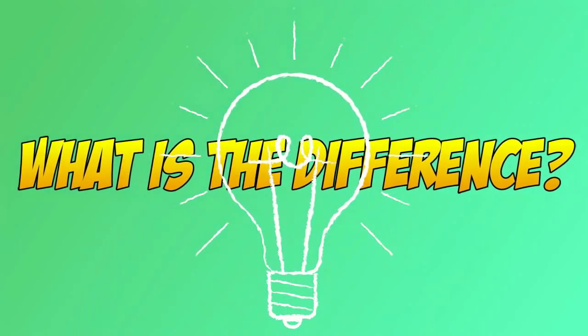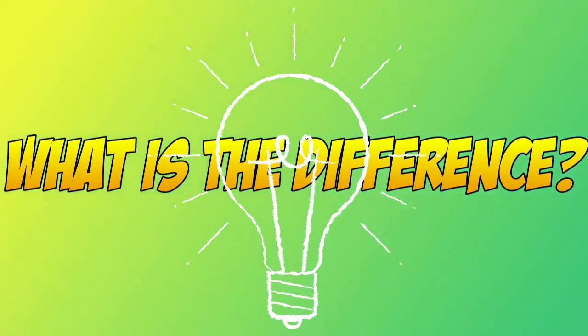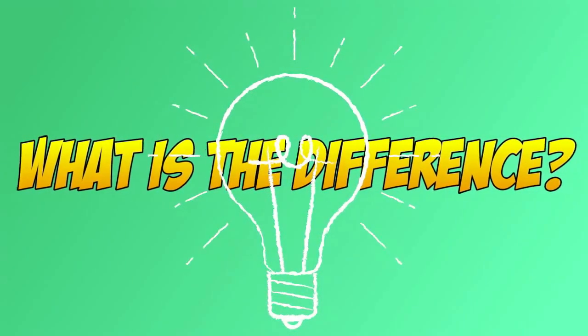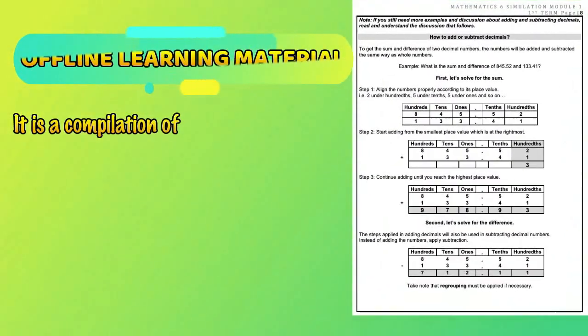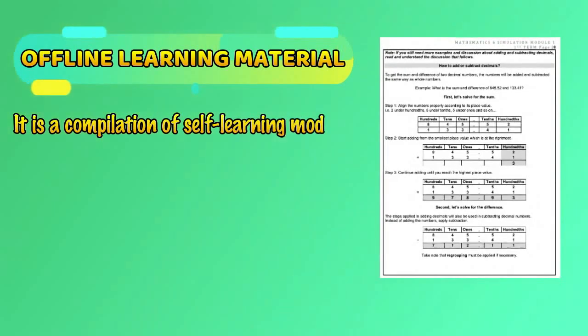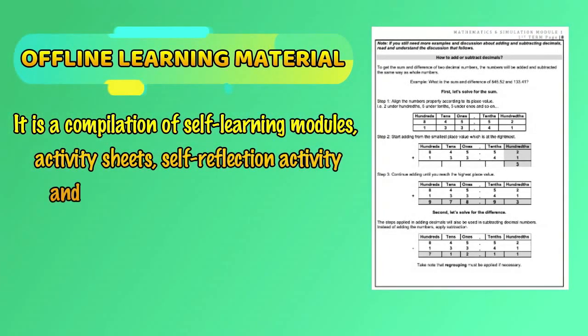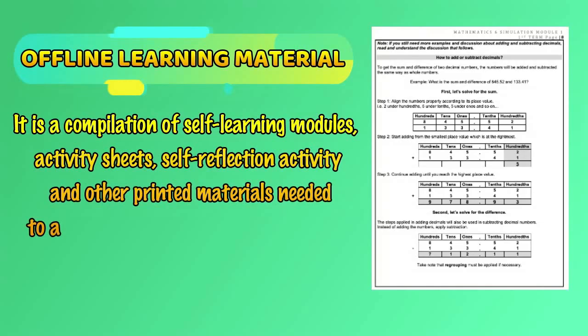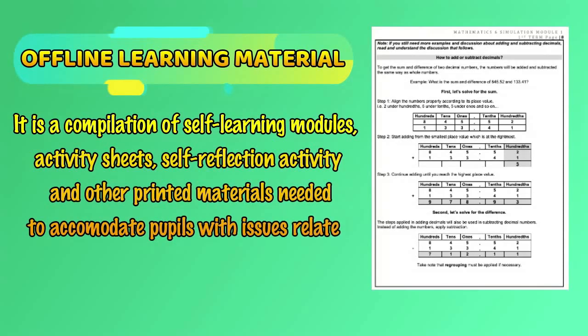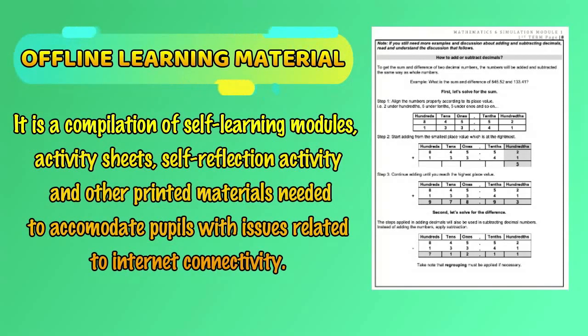But what is the difference? Offline learning material is a compilation of self-learning modules, activity sheets, self-reflection activities, and other printed materials needed to accommodate pupils with issues related to internet connectivity.